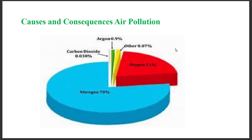Now let's look at the causes and effects of air pollution. As you all know, the thin layer of air that surrounds the Earth is called the atmosphere, which is composed of nitrogen gas, oxygen, carbon dioxide, and other gases.